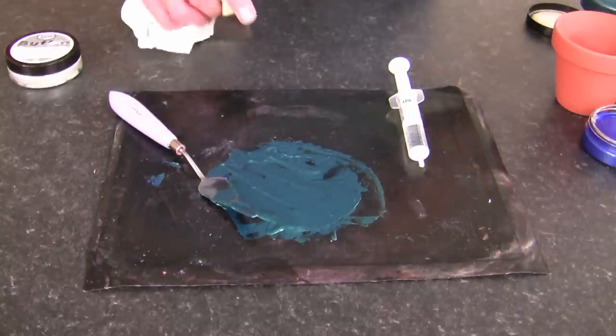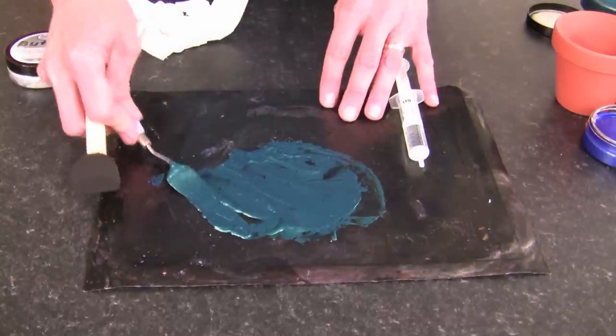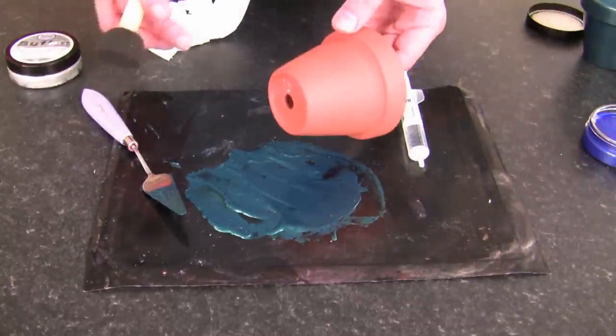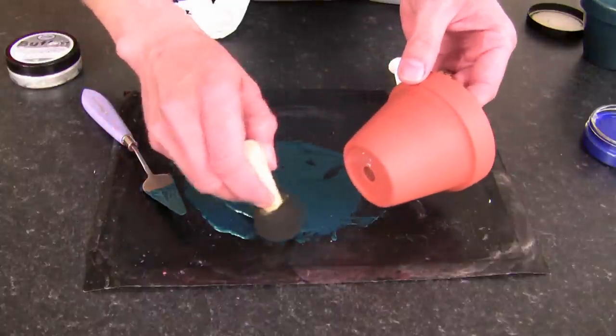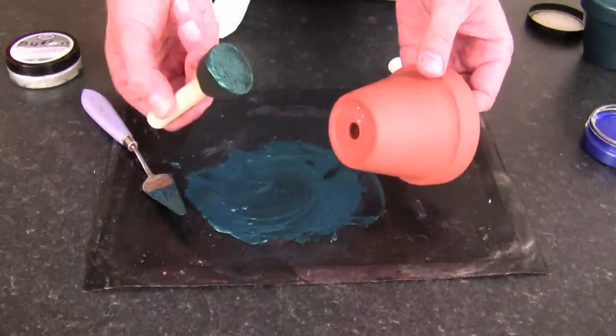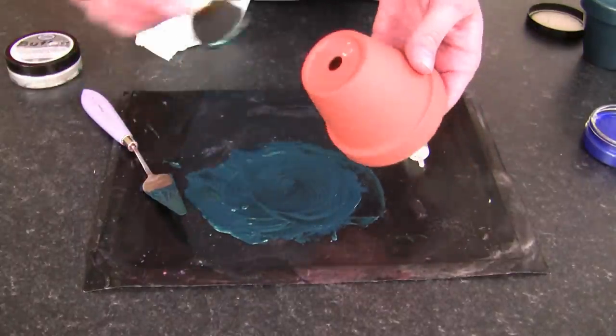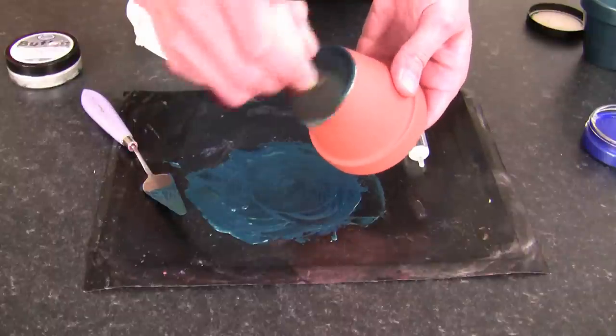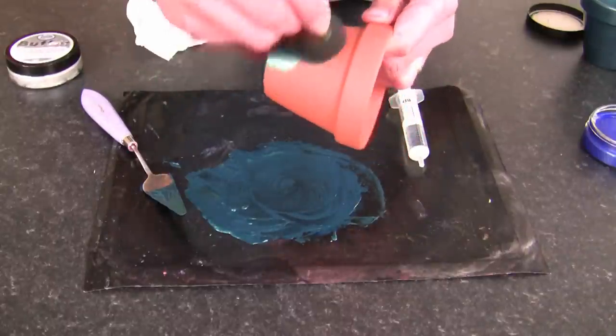Right, now comes a really good part and that's actually applying this to your pot. You don't need any special undercoat. Just grab your sponge applicator and you can see how easy that is to apply.